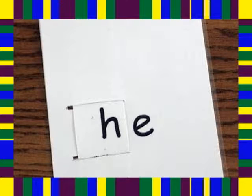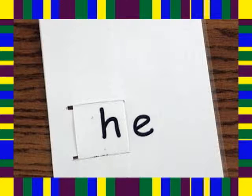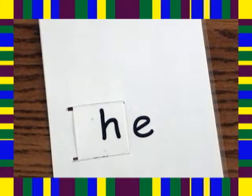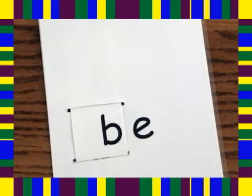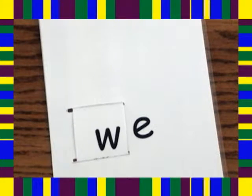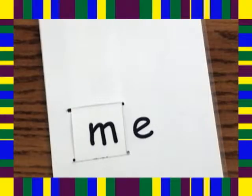The word slides are really simple. They consist of a piece of paper and you cut out a strip and put it in — you know that E makes the E sound — and then you move the strip in order to change the word. So: he, be, we, me.